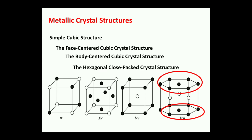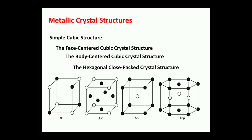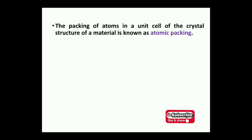For the hexagonal close-packed (HCP) structure, there are two hexagonal faces. Each corner of the hexagonal face has a single atom on the top and bottom sides, plus a center atom on each face. From the front side there is an alternate presence of atoms — six phases of the hexagon containing three alternate phases of atoms.